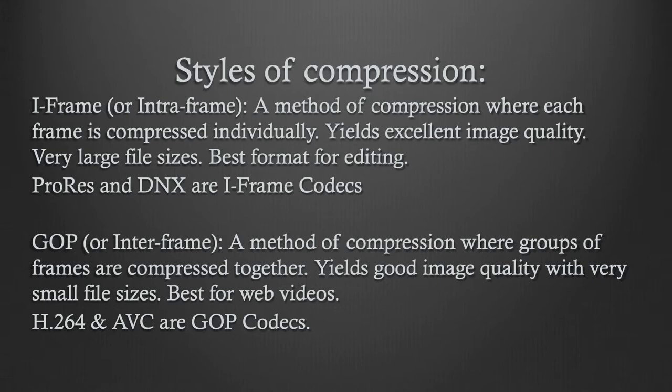GOP — group of pictures — or interframe compression is a method where groups of frames are compressed together. This yields good image quality with very small files. It's best for web videos and when you're trying to get the file size down as low as possible while maintaining visual and audio quality. A lot of DJI drones encode to H.264, even if it is an MOV. The MOV is just a wrapper — that's what it's wrapped in as a QuickTime video — but it has a codec of H.264.